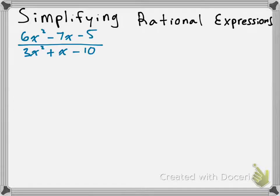This is an example of a rational expression. What I want you to notice is that we have basically a fraction, and at the top of the fraction we've got a polynomial — in this case, a quadratic polynomial — and at the bottom of the fraction we have another polynomial, also a quadratic polynomial, although you could have linear polynomials on the top or the bottom. In this case, we have quadratic for both.